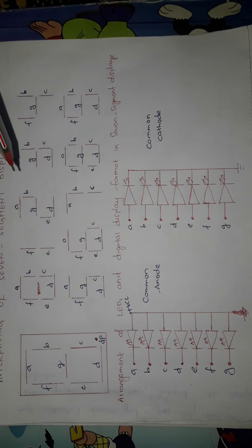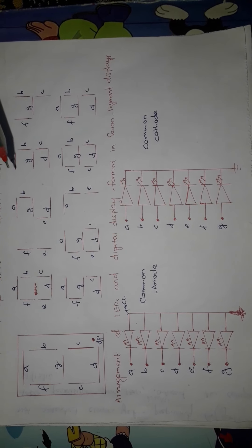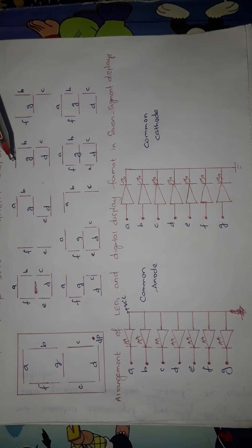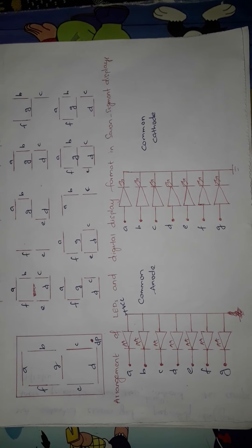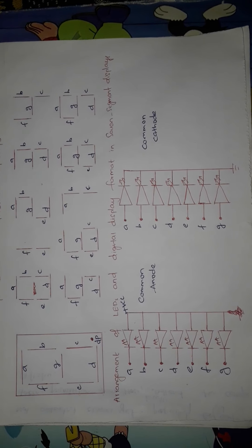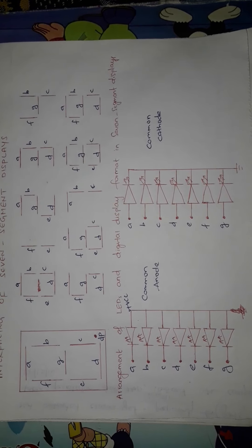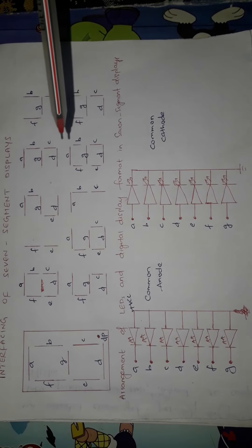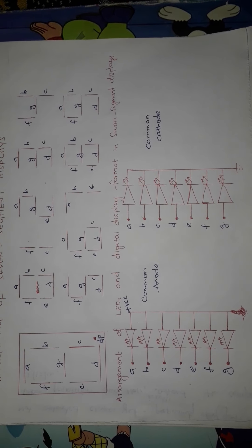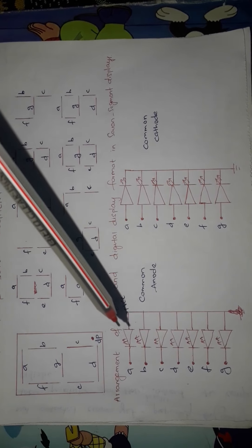To display two, turn off F and C and turn on the rest of the segments. To display three, segments E and F are off and the rest are on. Likewise, the numbers and characters can be displayed. These seven segment displays are popularly used in different applications like display boards, weighing machines, and many real-time applications. The configuration is set up with LEDs, where each segment represents one LED.